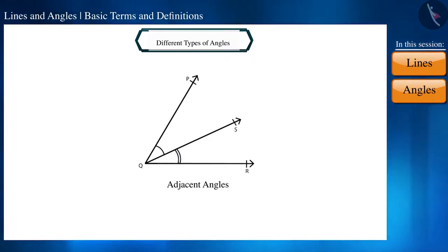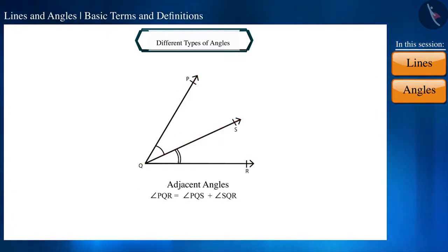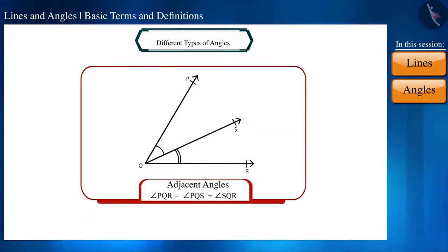Friends, by looking at the figure, can you tell any relationship between angle PQS, angle SQR, and angle PQR? Note here, angle PQR is formed by joining angle PQS and angle SQR. That is, the sum of these two angles will be equal to this, and we can write it like this.